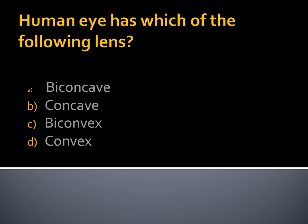Human eye has which of the following lens? There is a lens in our eye — which type of lens is present in the human eye? Option A, Biconcave lens. Option B, Concave lens. Option C, Biconvex lens. Option D, Convex lens. The answer is Biconvex lens.